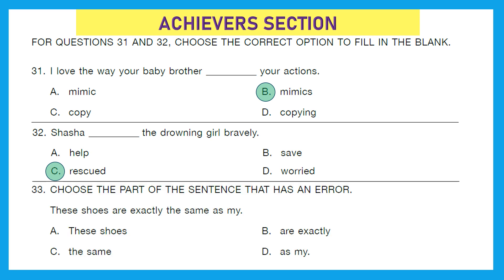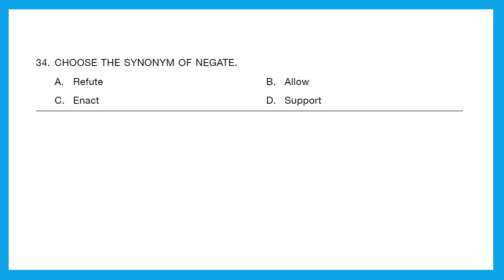Question 33: Choose the part of the sentence that has an error. 'These shoes are exactly the same as my.' The correct sentence should be 'these shoes are exactly the same as mine.' So the portion with an error is option B, 'as my.' Question 34: Choose the synonym of 'negate.' Options are: refute, allow, enact, or support. Refute is the synonym of negate because both mean to state that something is incorrect or does not exist. Option A is the right answer.